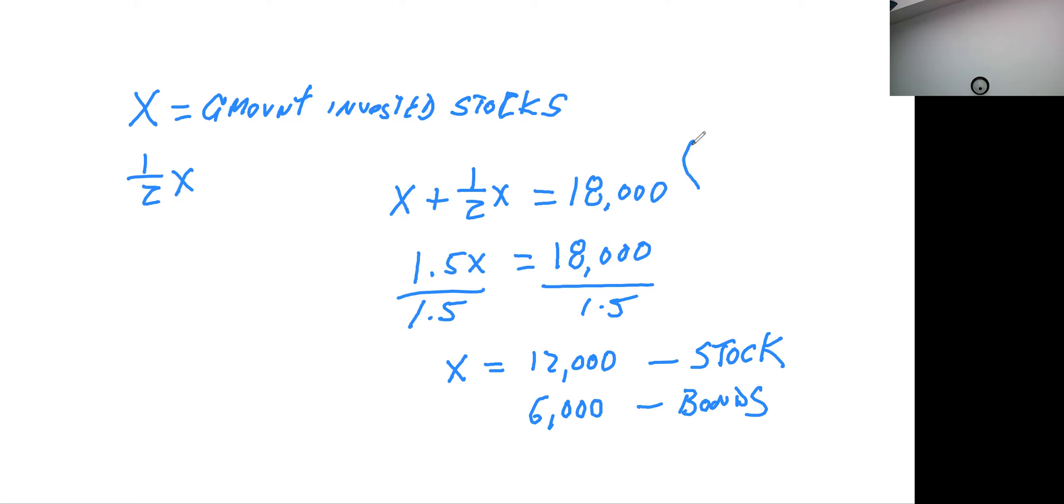Just to reiterate here real quick, instead of using 1.5, if you added this together using fractions, you could also say that is 3/2 x equals 18,000. When you're dealing with fractions, how do we make the number in front of the x equal to one? We're going to multiply each side by 2/3. When you multiply each side by 2/3, you would get x equals—this would be 6,000 times 2—and that also gives you 12,000 as well. You could use your calculator and calculate it this way, or you could use fractions and start canceling common factors and do it that way as well.